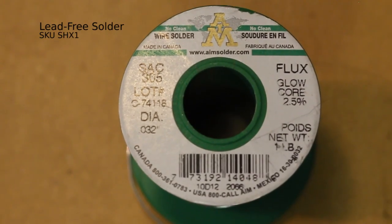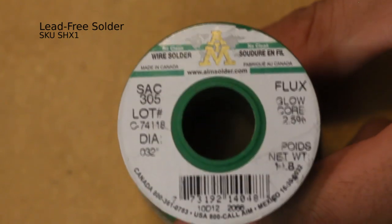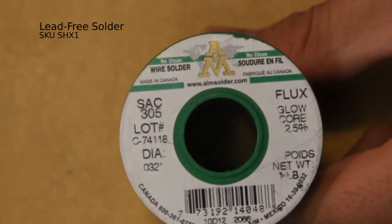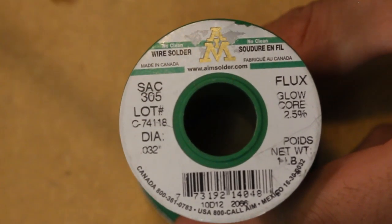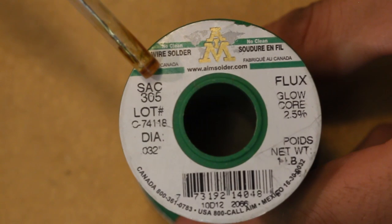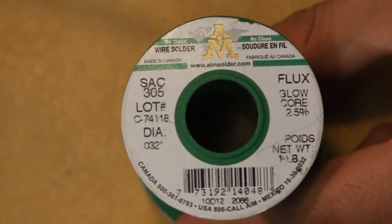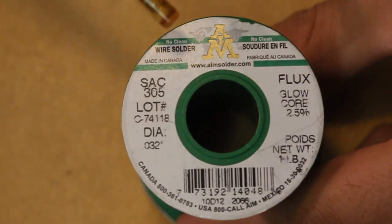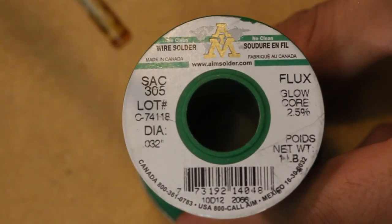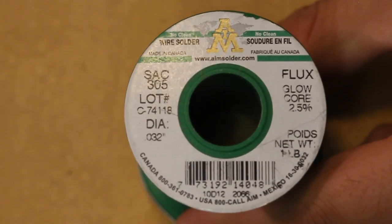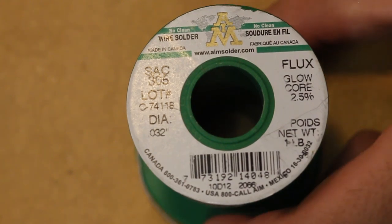So here we go. We've got our solder here. The stuff that we use at Solarbotics is called SAC305. That means it's actually tin, silver, copper. Those are the beginning letters of the elements. And then 305 means 3% silver and 0.5% copper, and the rest being tin, so that's 96.5% tin.